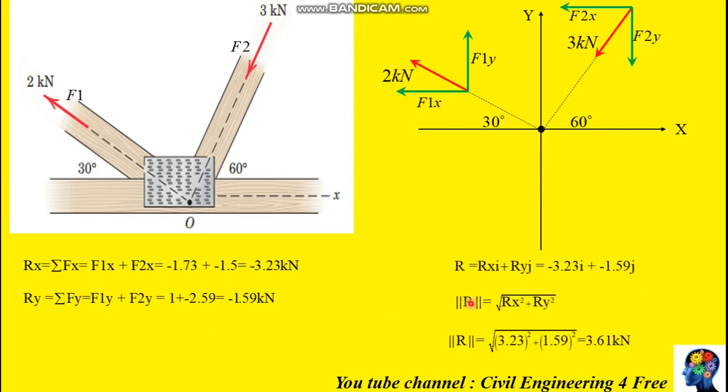So negative 3.32 squared plus negative 1.59 squared. The sign doesn't make a difference since it's squared. It will give us 3.61 kilonewton. So this will be the magnitude of the vector sum.